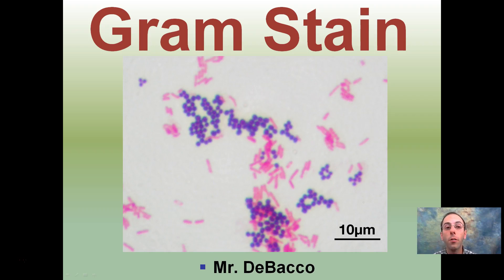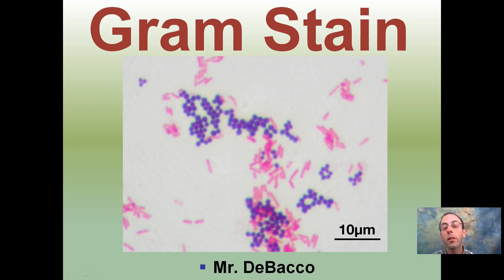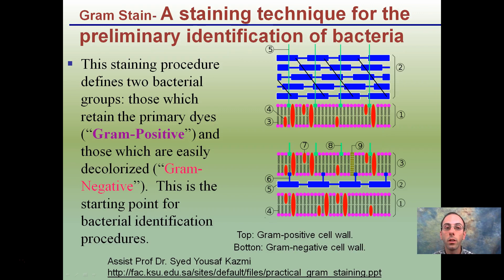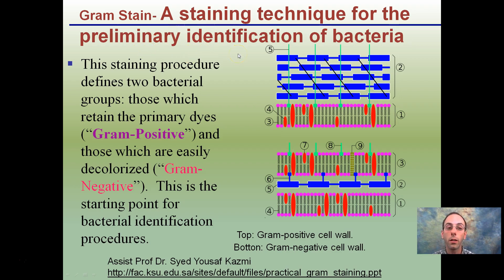Here I'm going to go over the basics of a gram stain. This is used for identifying certain bacteria based on the type of exterior structure that these prokaryotes have. It's a staining technique primarily for the identification of bacteria.